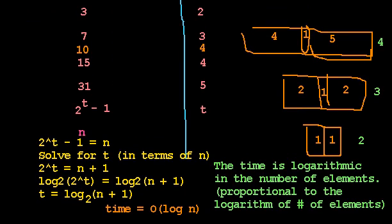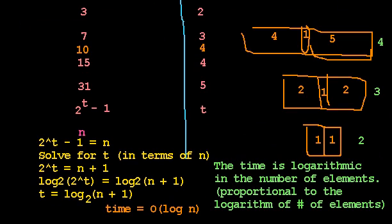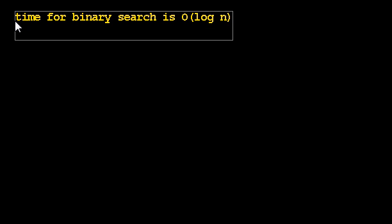Does this round out everything we need to know? I want to state another way of looking at logarithms. Since we said that the time for binary search is big O of log n. In other words, logarithmic in the number of elements.